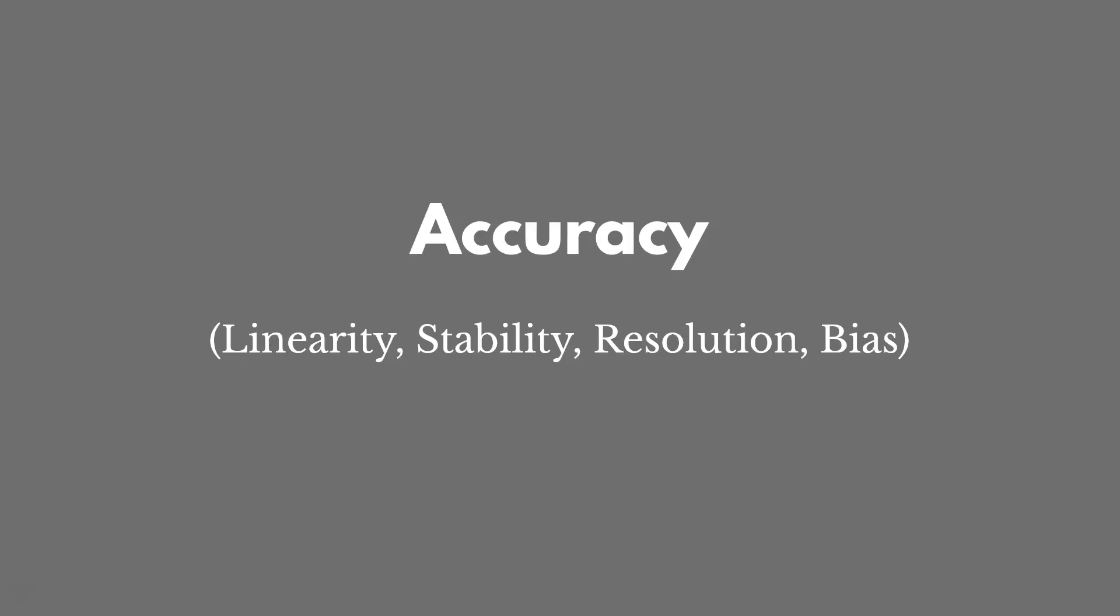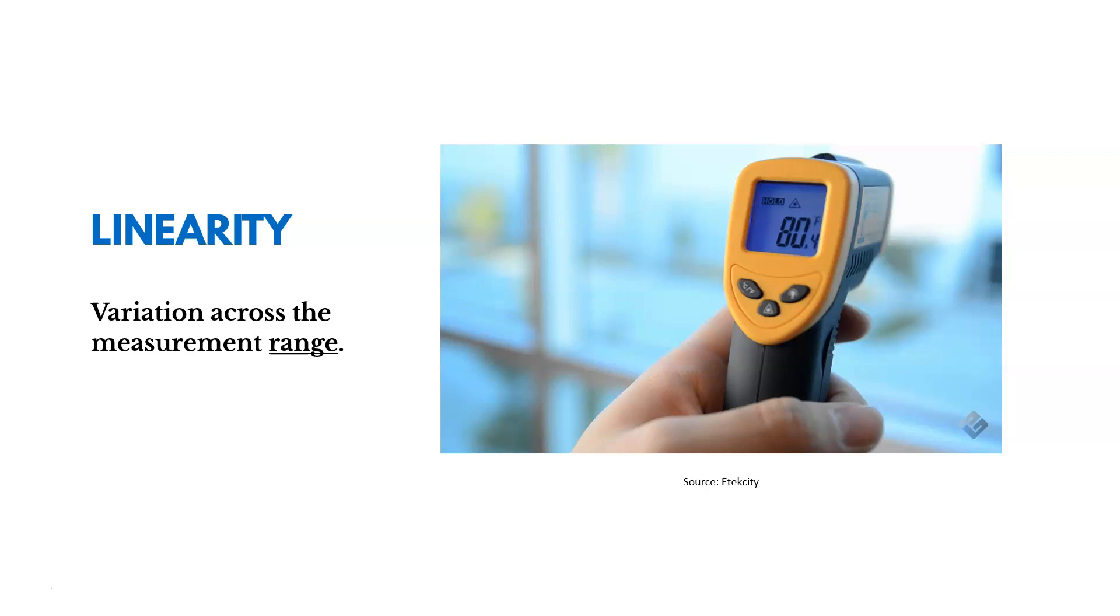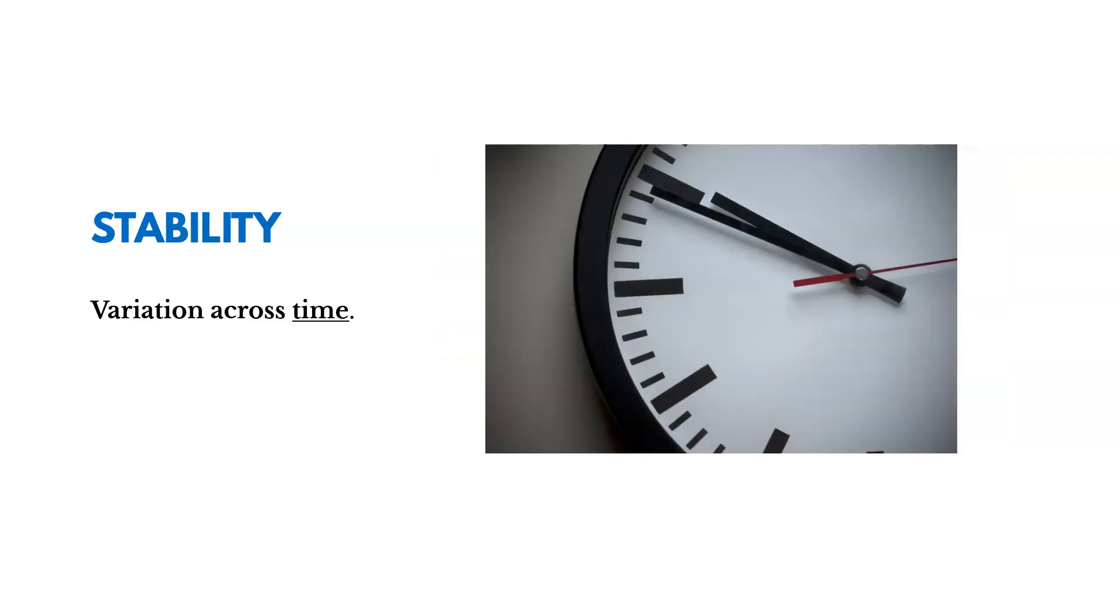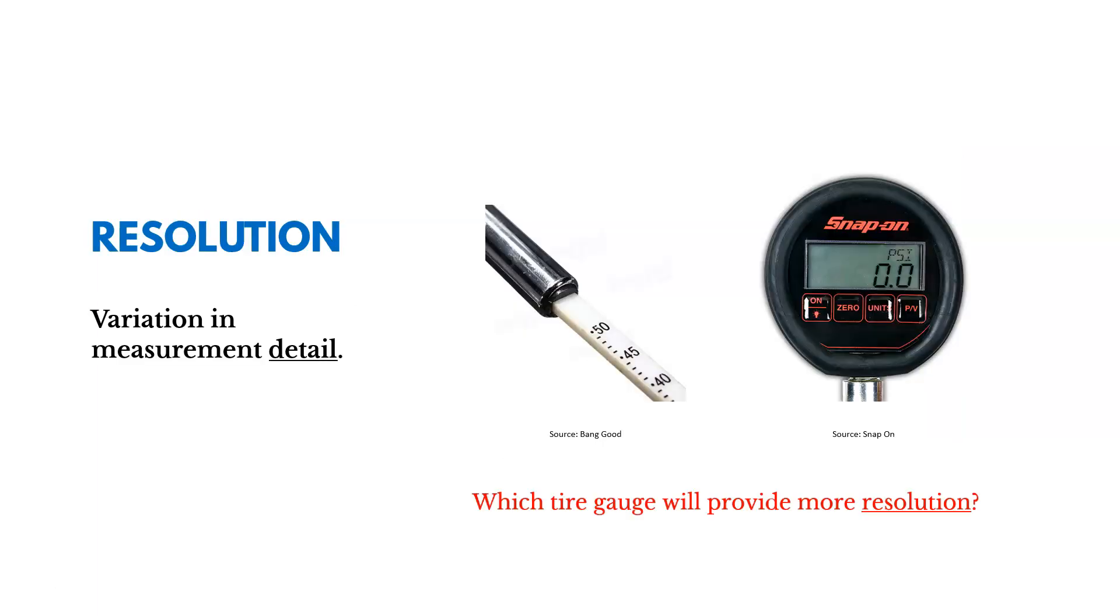Now diving a little deeper here into accuracy again with these four goals. We have linearity, which measures variation across the measurement range. We want to minimize that. So again, the temperature example is getting accurate readings in both low and high temperatures, or low and high pressures, if we're measuring pressure. And the stability is monitoring and minimizing variation across time, making sure we have stable measurements. And then resolution is variation in measurement detail. Now, if you take a look at these two gauges, the question you could ask is which tire gauge would provide more resolution. It would be that digital gauge. It's much harder to see the detail in the manual gauge there.